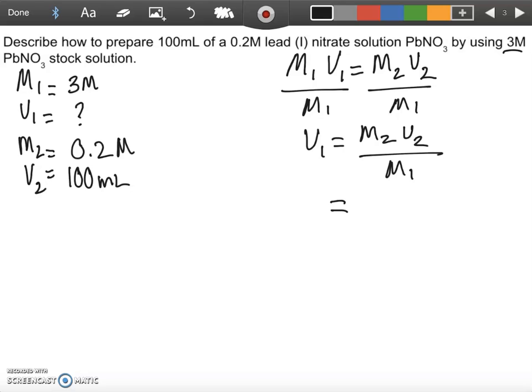And now we can plug in to figure out how much volume of stock that we need. Okay, so M2 is equal to 0.2 molar. V2 is equal to 100 milliliters. Again, we can leave it in milliliters in this case here.